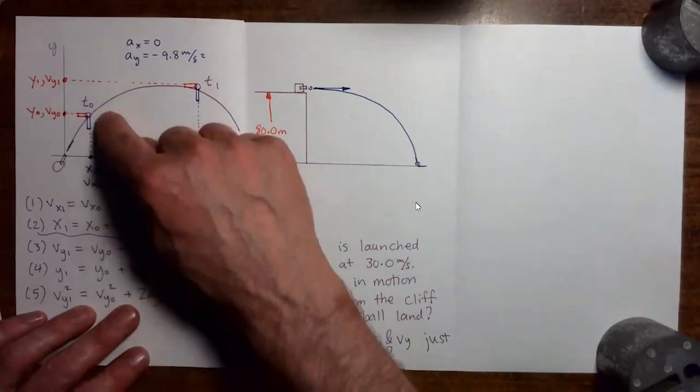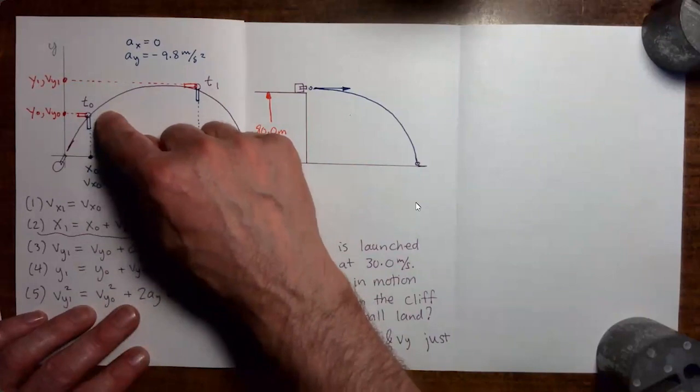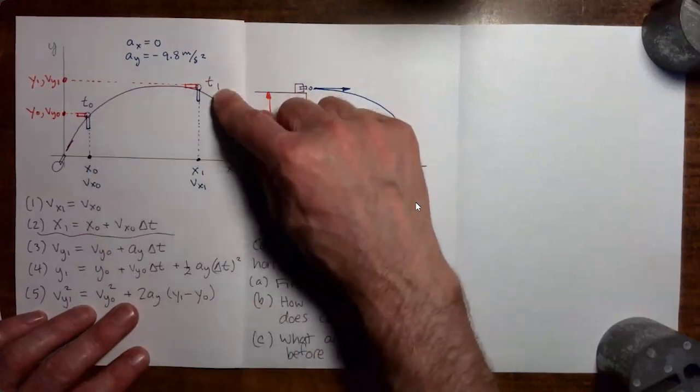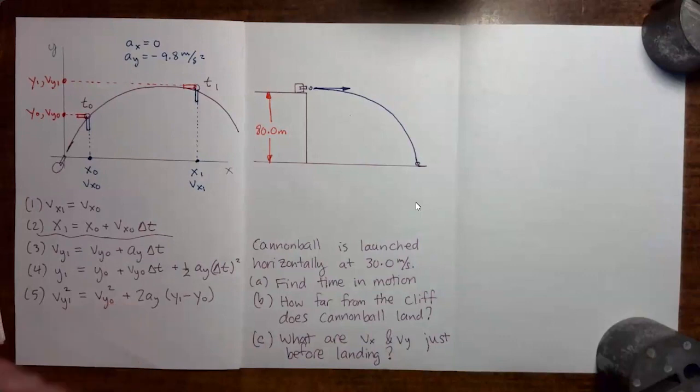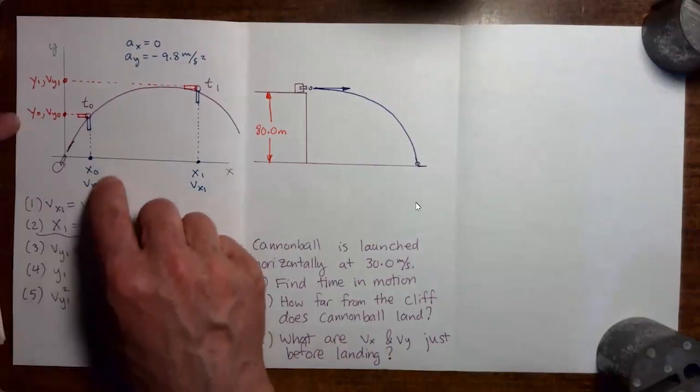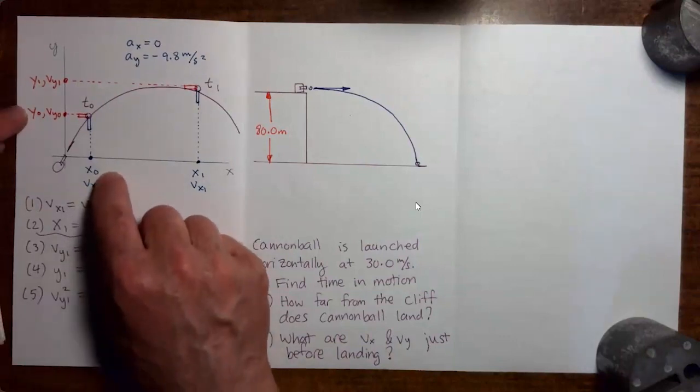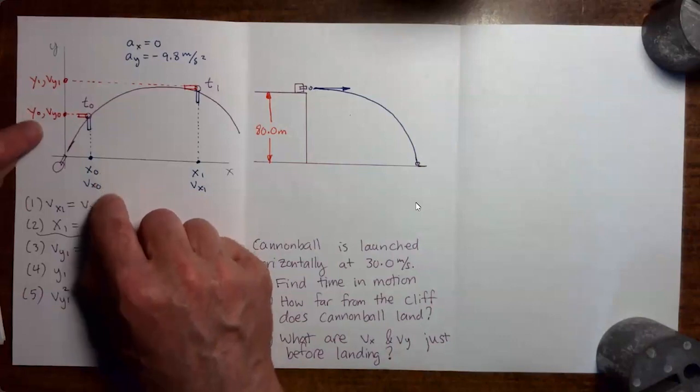They connect the position and velocity of the projectile at an earlier time to the position and velocity at a later time. Because we are in two dimensions, for each time we have two variables for position, x and y, and two variables for velocity, vx and vy.